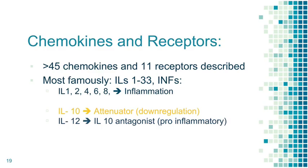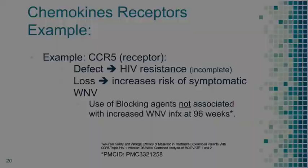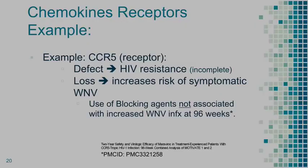Most famously we have interleukins, which we're looking to exploit therapeutically for cancers, autoimmune diseases, and infections. There are 33 interleukins and interferon so far. IL-1, 2, 4, 6, and 8 are pro-inflammatory. IL-10 is an attenuator — a down-regulator. IL-12 is relevant later with IL-12 receptor deficiency syndrome; it's pro-inflammatory but works by inhibiting IL-10, so it inhibits the inhibitor.